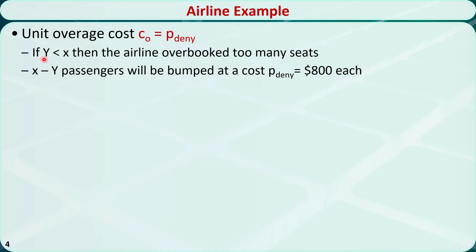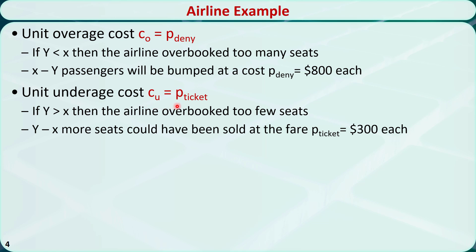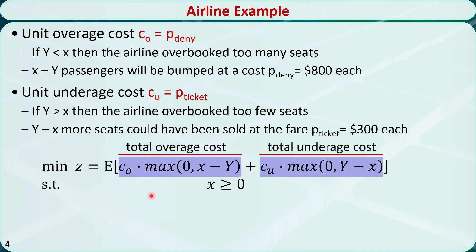The unit overage cost CO is equal to P_denied. If the number of no-shows or empty seats Y is less than the number of overbooked seats X, then the airline overbooked too many seats — X minus Y passengers will be bumped at the cost of P_denied, which is $800. The unit underage cost CU is equal to P_ticket. If Y is greater than X, then the airline overbooked too few seats, and Y minus X seats could have been sold at the price of P_ticket. The goal is to find the optimal number of overbooked seats X* that minimizes the expected total overage and underage costs.